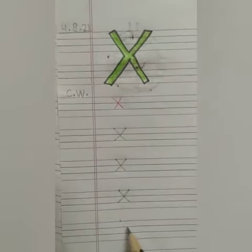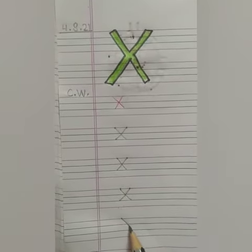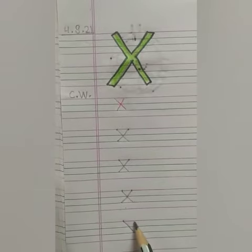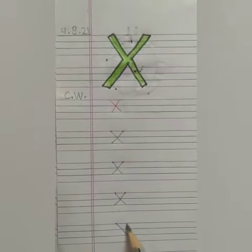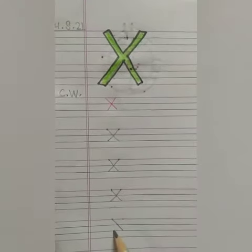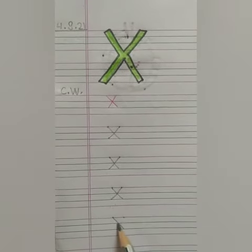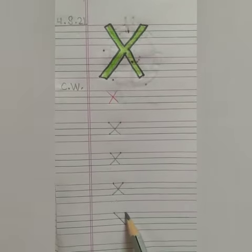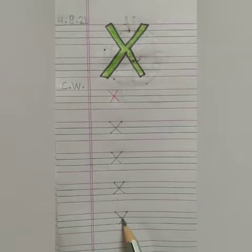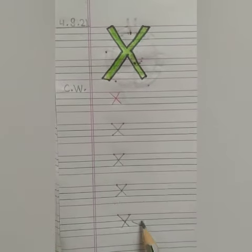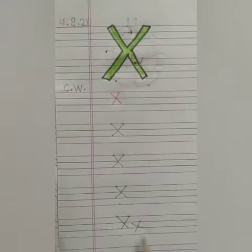Put single dot, slanting line and again slanting line. Then we will make a slanting line. It will be wrong. This will be wrong.